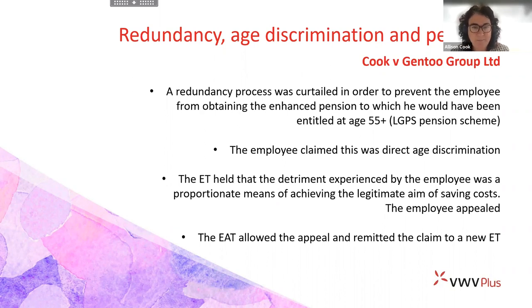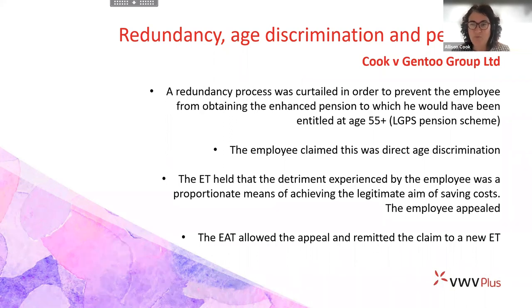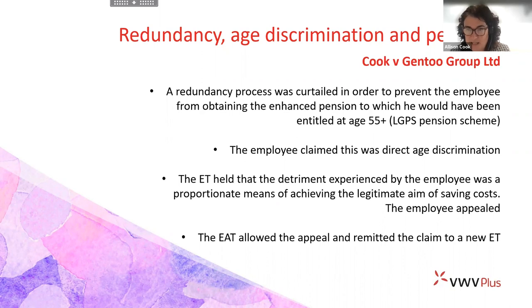This case was considered by an employment tribunal, and the tribunal agreed that Mr. Cook had been unfairly dismissed. It found that the speed of the redundancy consultation procedure was unfair and that there hadn't been any real attempt or opportunity to look for suitable alternative employment — one of the requirements in a redundancy situation. The tribunal also found that if the employer had run a fair process, Mr. Cook would still have been made redundant, but this would have taken effect after his 55th birthday, meaning he should have been entitled to his retirement benefits.